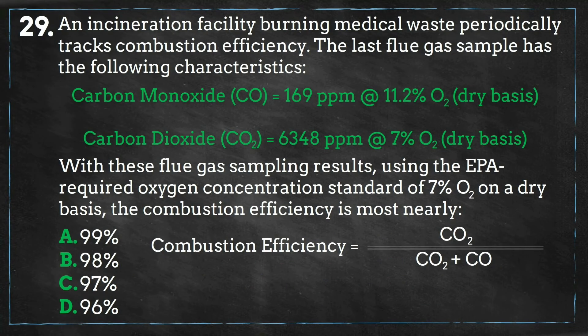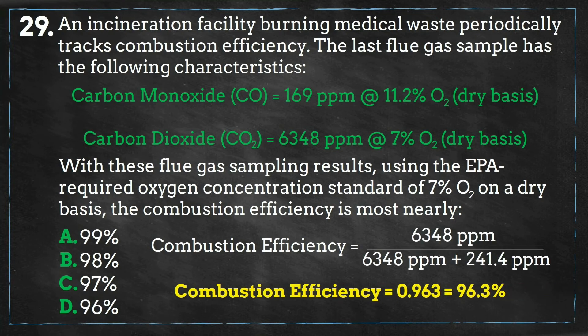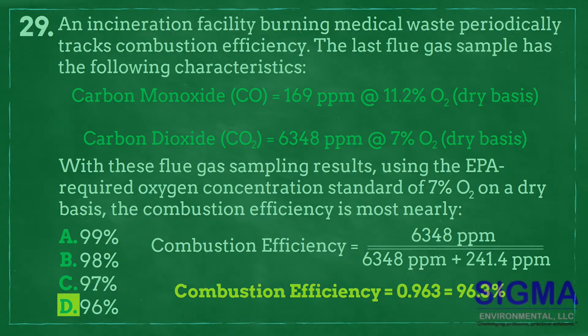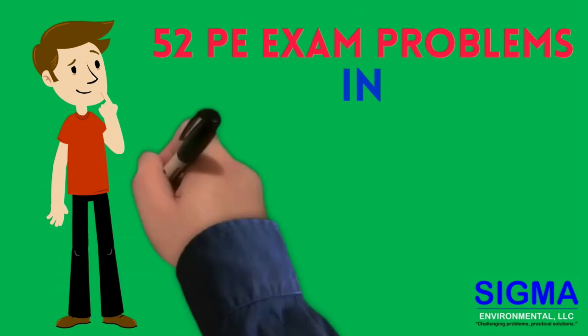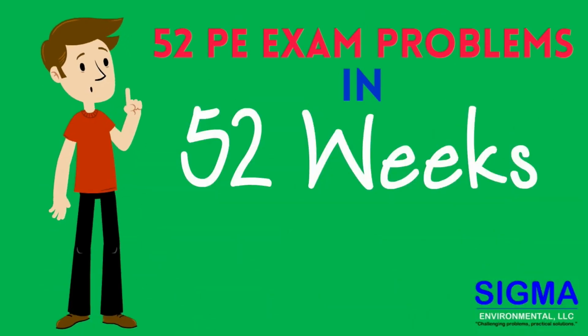Now that both concentrations are assuming 7% oxygen levels, we will plug them into the efficiency equation and we get a value of 96.3%, which is closest to D. Join us for episode 30 of 52 PE exam problems in 52 weeks.